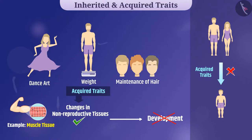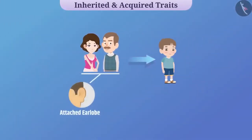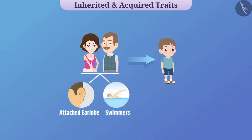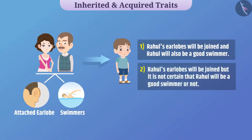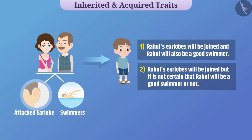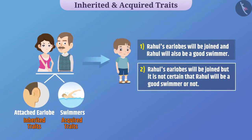Here is an interesting question. If Rahul's mother has an attached earlobe and Rahul's father also has an attached earlobe, and both are good swimmers, what can be said certainly about Rahul? Option one: Rahul's earlobes will be joined and Rahul will also be a good swimmer. Option two: Rahul's earlobes will be joined but it is not certain that Rahul will be a good swimmer. The attached earlobe is an inherited character whereas swimming is an acquired character. Hence, the second option is the correct answer.